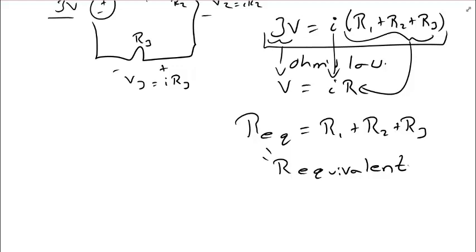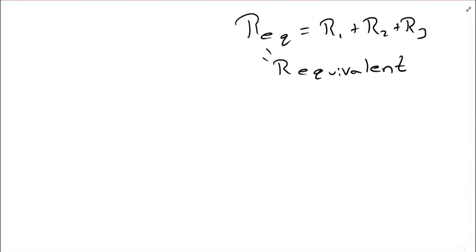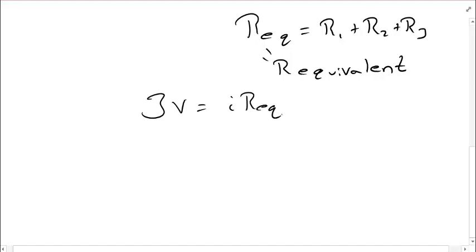So, what I can do is rewrite my equation as 3 volts is I times REQ. In general, when I'm not just dealing with a 3 volt source, it'll be the voltage source is equal to I times REQ. So, what can we gain from this? Resistors in series add together.